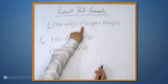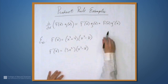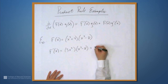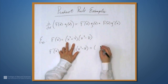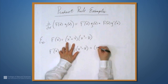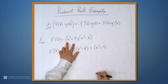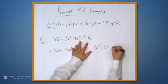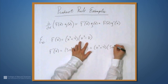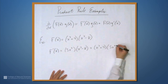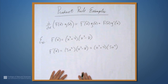So that's f' times g. Now let's write f times g': plus the first part unchanged, which is x³ + 4, times the derivative of the second part, which is 5x⁴ (minus 0, which I won't write). So there's f' by the product rule.